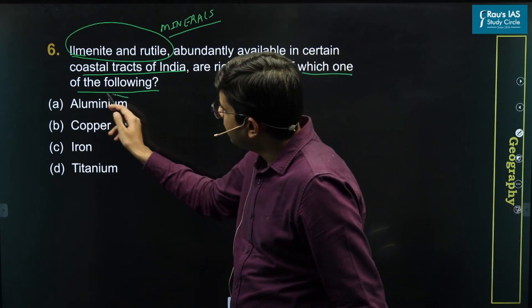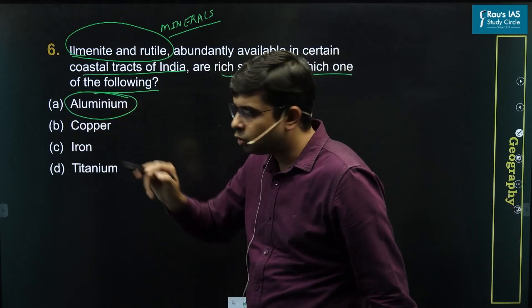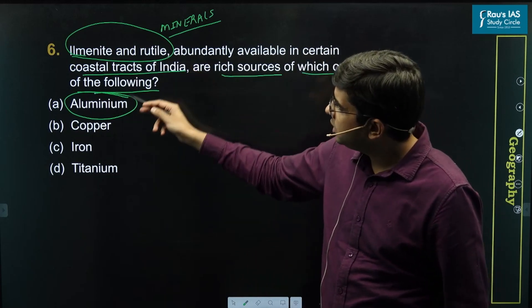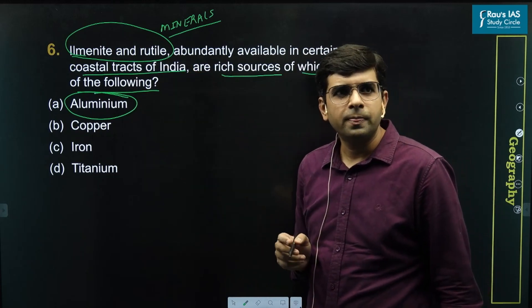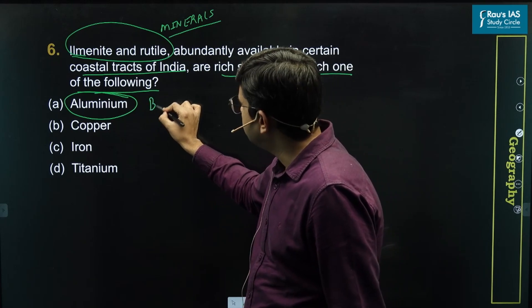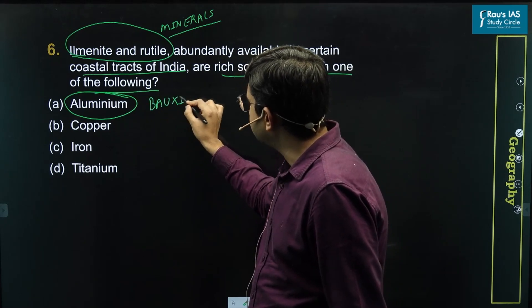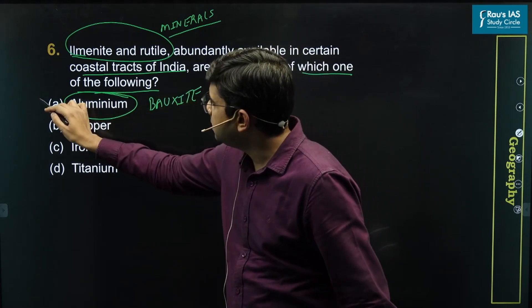Option A: whether aluminium is present in ilmenite and rutile. Is this the chief ore of aluminium or not? Answer is no, because the chief ore of aluminium is bauxite. Consequently, this option can be eliminated.